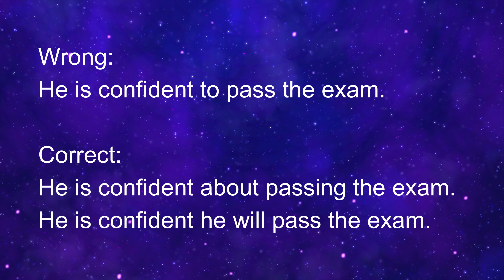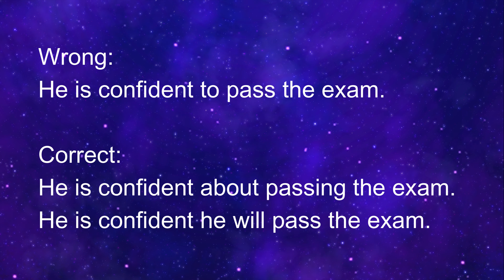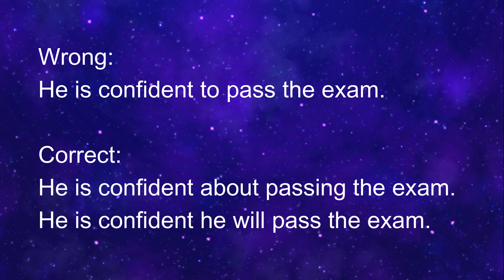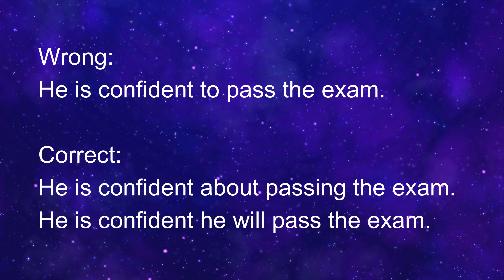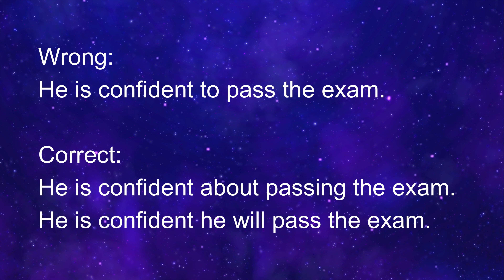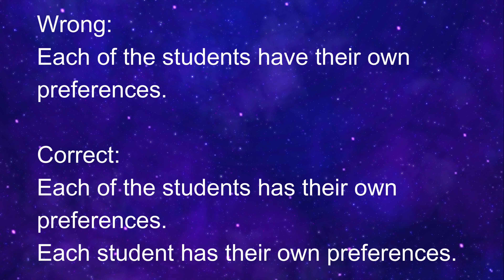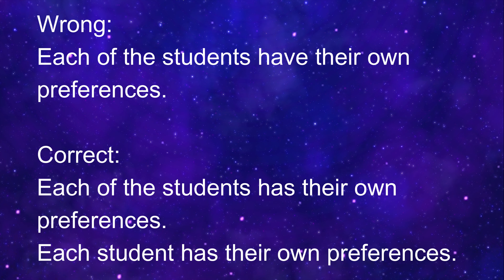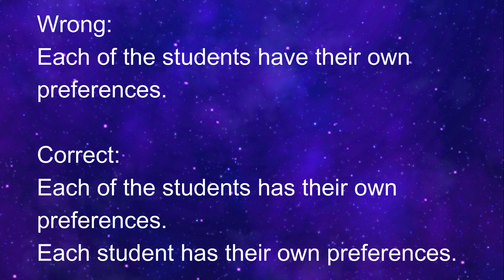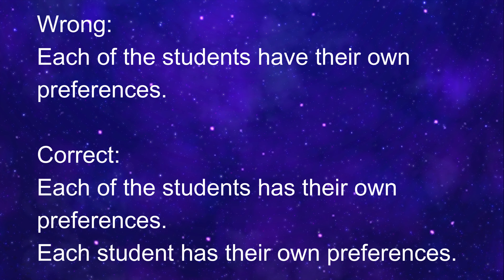He is confident to pass the exam. Where is the mistake? We normally do not say 'somebody is confident to do something,' because 'to do something' refers to the future. We would normally say: he is confident he will pass the exam. Or: he is confident about passing the exam. Each of the students have their own preferences. We should say: each of the students has their own preferences, because the subject 'each of the students' is singular. Or: each student has their own preferences.